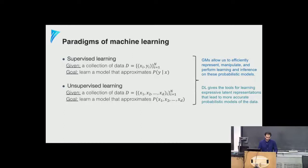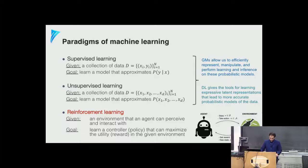RL is slightly different — we no longer have a dataset. Instead, we're given an environment with a certain interface that our agent or policy can perceive and interact with. The goal of the agent is to maximize some sort of utility in this environment, represented by the reward.